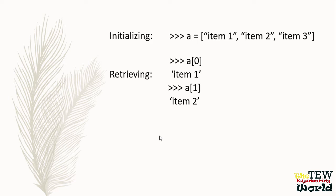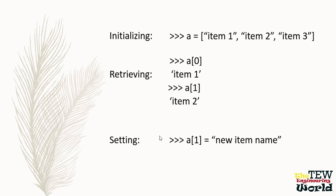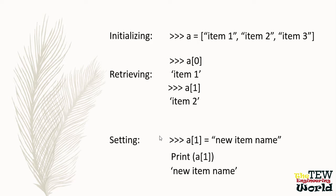Python list is 0-indexed, meaning the indices in a Python list start at 0. To change an element in this list, you can write A square bracket 1 equals new item name, and this sets the second element, or the element at index 1, to be new item name.